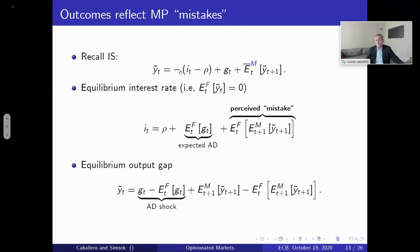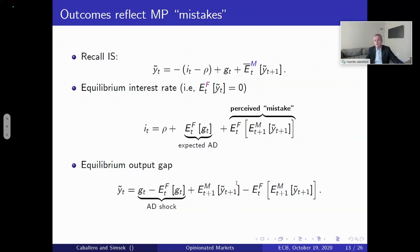Replacing this interest rate back into the IS curve gives the equilibrium output gap. The equilibrium output gap is the result of a surprise according to the Fed's belief — if aggregate demand turns out higher than the Fed expected, the output gap is positive. It will also be a function of the surprise for the Fed on the degree of optimism of the market. The Fed has an expectation about the market's degree of optimism or pessimism, but the market may end up more optimistic or more pessimistic than the Fed expected, and that also affects aggregate demand.